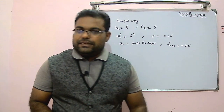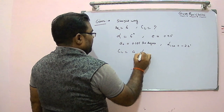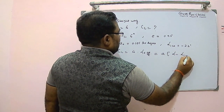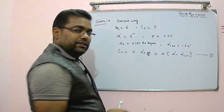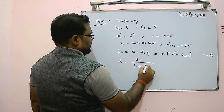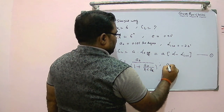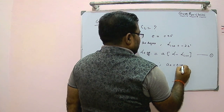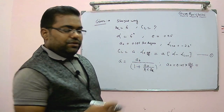We need to find C_L. We know C_L equals a times (alpha minus alpha_L0). We know alpha and alpha_L0, but we need to find a. Using the formula: a equals a0 divided by (1 plus a0 divided by pi times e times aspect ratio). Since pi is in radians, we first convert a0 to radians: 0.105 per degree times (180 divided by pi) gives approximately 6.02 per radian.